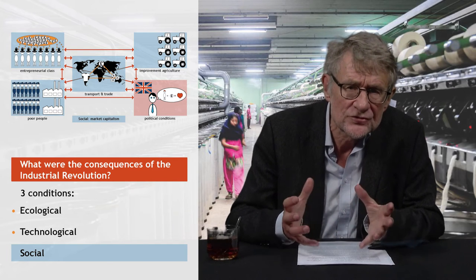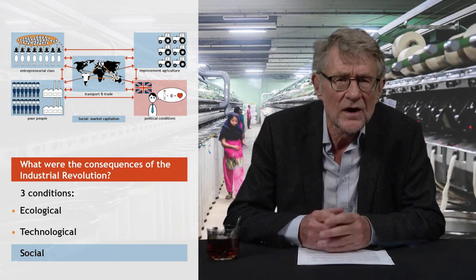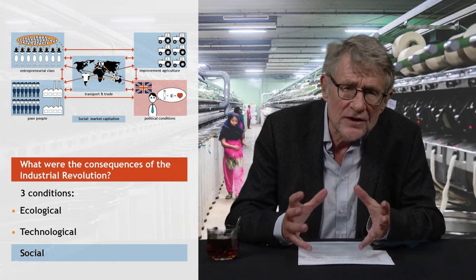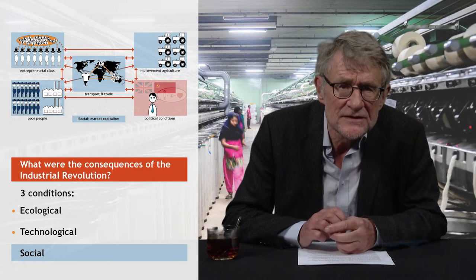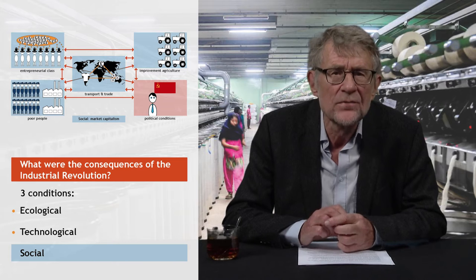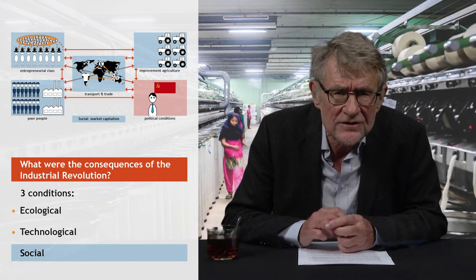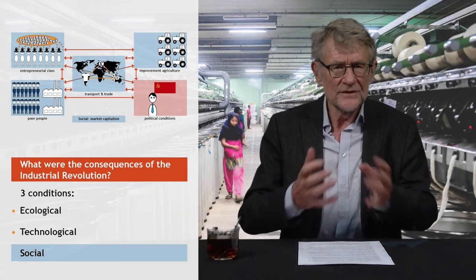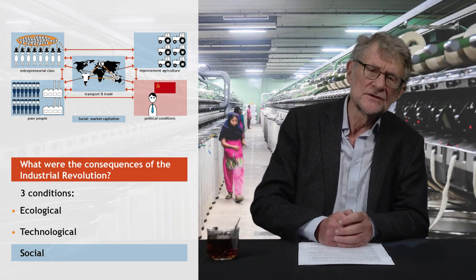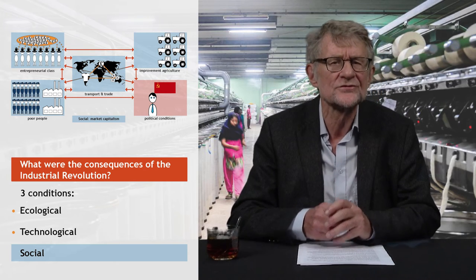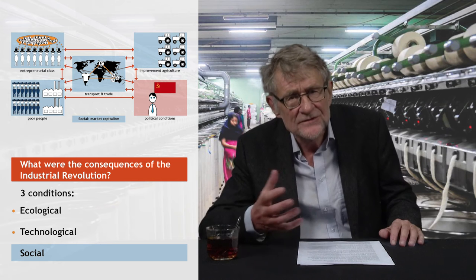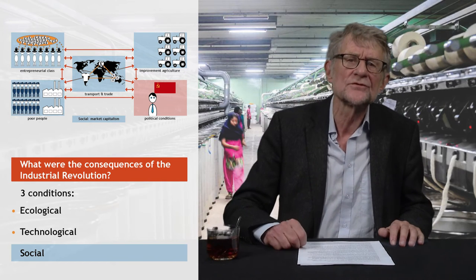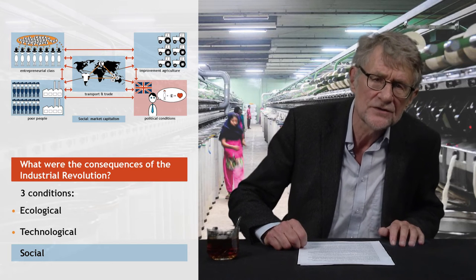The Industrial Revolution also had important political consequences, as national states took more and more responsibility in creating favorable conditions for industrial growth — for example, by constructing roads, railroads, and harbors, by organizing and financing public education, and by regulating working conditions. In Russia, since the revolution of 1917, the state took an even more active role by abolishing private property and directly organizing industrial production through central planning. This alternative communist system seemed quite successful for a while, but eventually its productive performance remained far below those of the richer capitalist societies, and in the 1980s the system collapsed. Today, the capitalist mode of production based on private property and profit orientation is hardly challenged anymore.